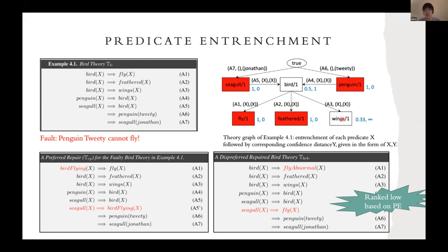Wings is quite far from the benchmark because it is not a precondition of any other predicate in the benchmark. In this case, the further a predicate is to the benchmark, the less trusted it is, so the less entrenched it is.